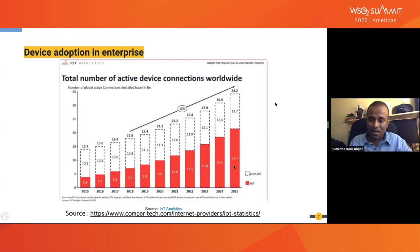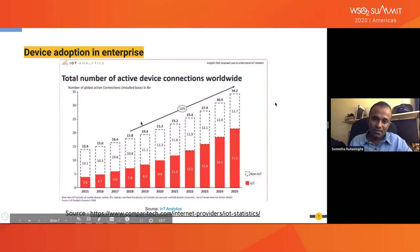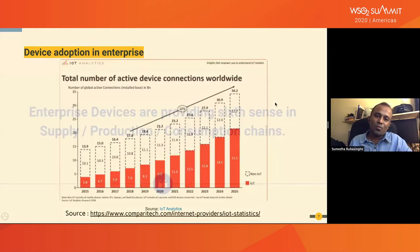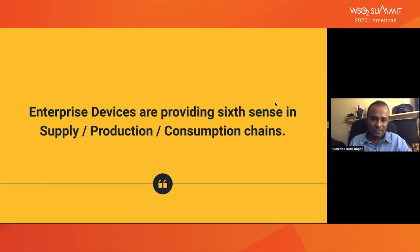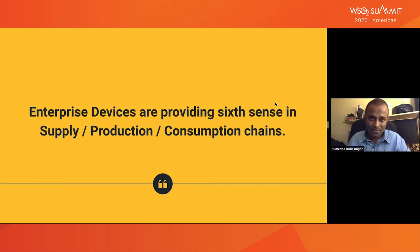On the third slide, I have the total number of active device connections worldwide. The red bars represent IoT devices and the white area represents non-IoT devices. As you can see, as of 2020 there is a rapid increase in active device connections. Enterprises use this many devices to understand the sixth sense about how supply happens, how production of their services happens, and how consumption of their products or services happens — analyzing these three aspects: supply, production, and consumption.